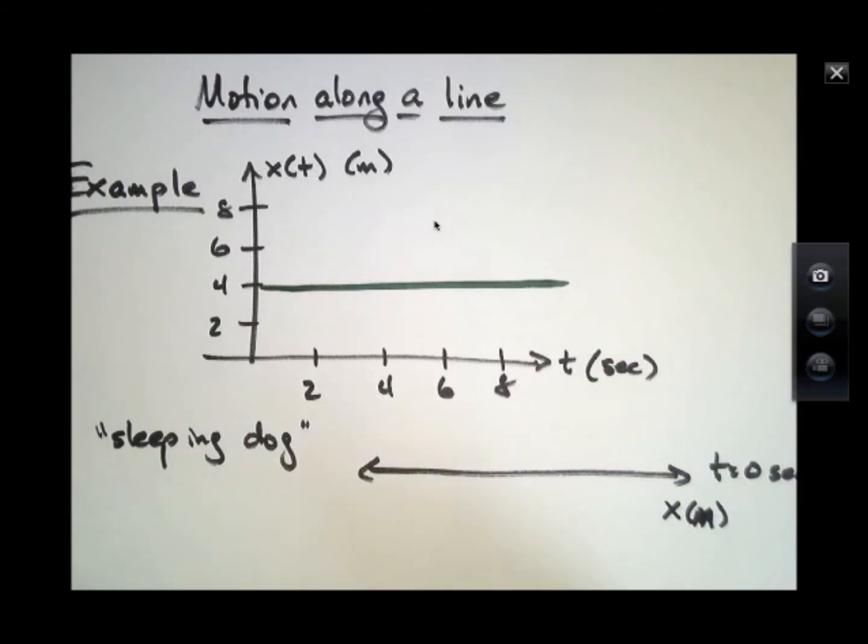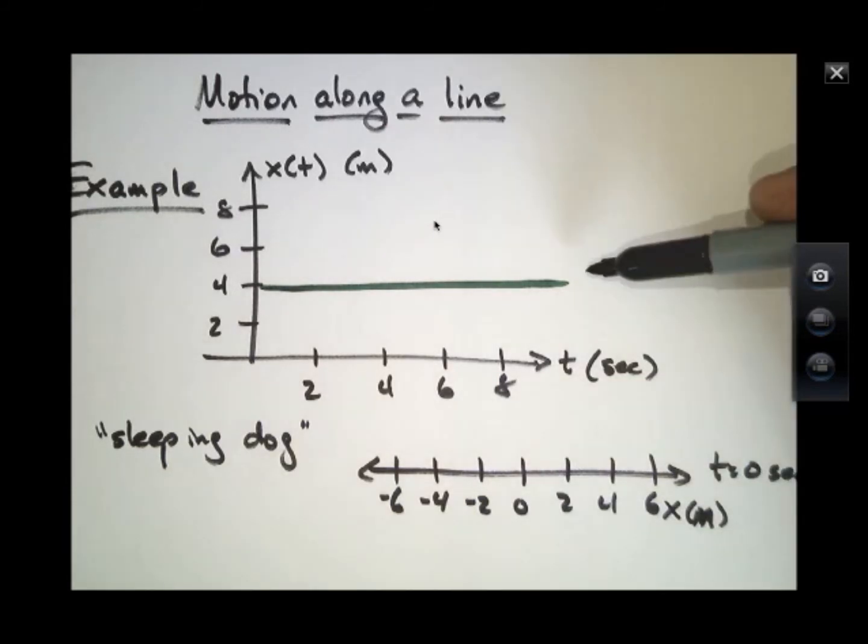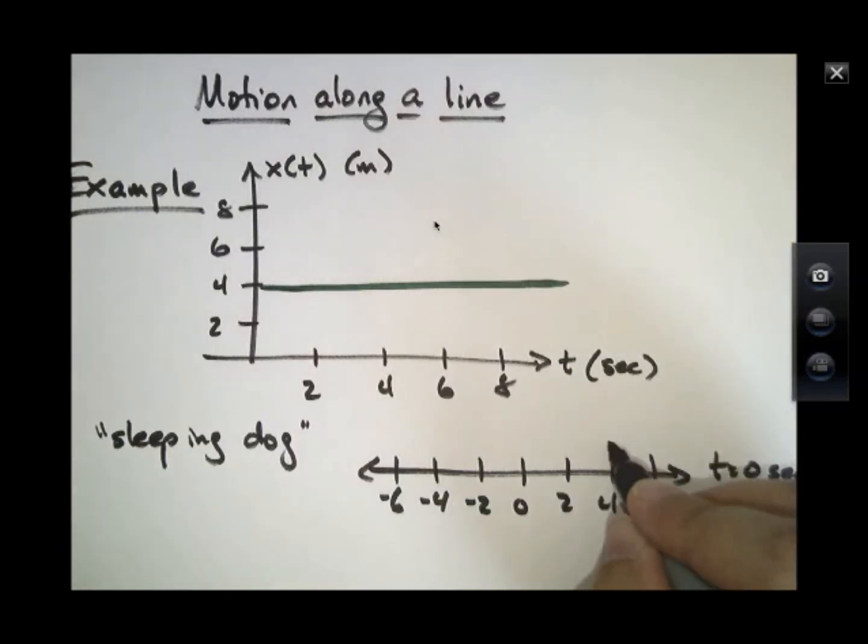It has a value of 4 meters, and here's the origin, and here are other locations too, 4 or 6 meters. This graph shown above, it shows x as a function of time, simply depicts an object that at times t equals 0 is parked right here. We'll call it FIDO.